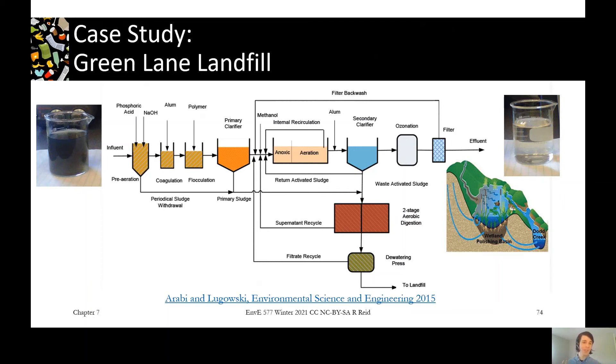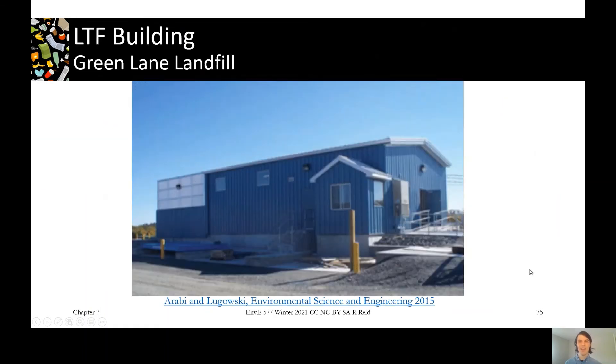So a lot of things look similar to a traditional domestic wastewater treatment plant. We've just got some little tweaks, the phosphoric acid, coagulation flocculation, and just to emphasize how the scale differs between leachate treatment and domestic wastewater treatment. So Green Lane landfill, one of the biggest landfills in Ontario. But if you look at the leachate treatment plant, here's the building. So if you've ever been to a wastewater treatment plant, it's like a huge campus and there's all these big outdoor tanks. The whole thing that's in this little building.